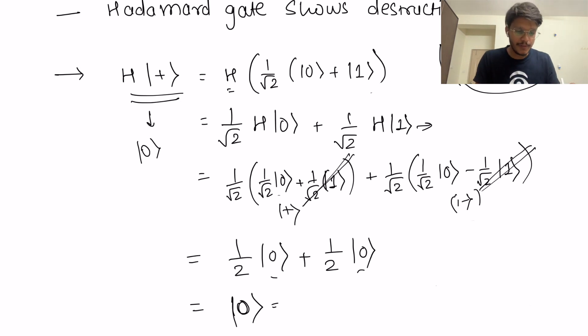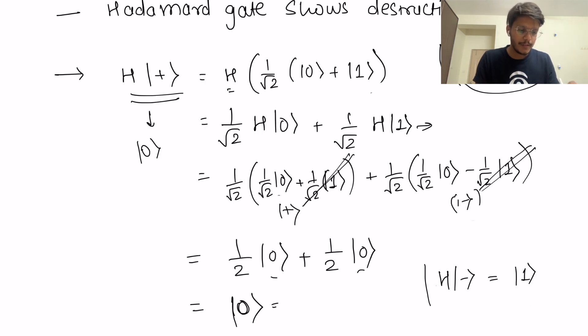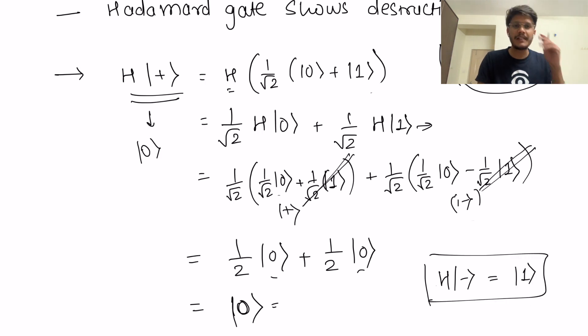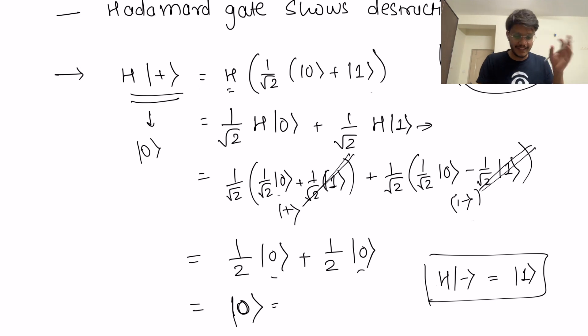The exercise for you is to try it out: apply the Hadamard gate on the |−⟩ state, and you should get back state |1⟩. Please go ahead and try this out.